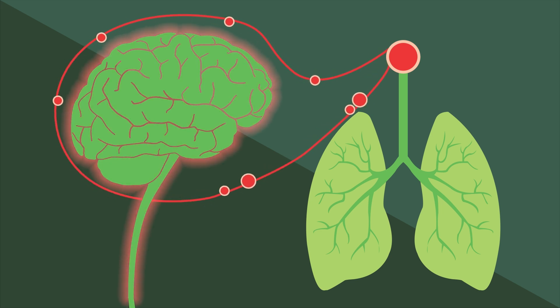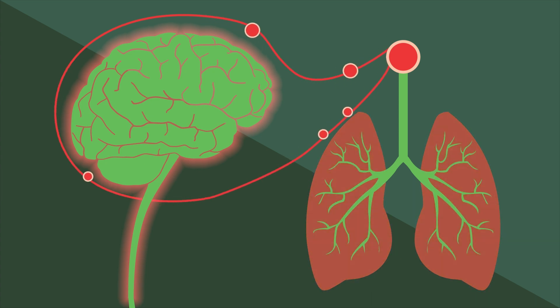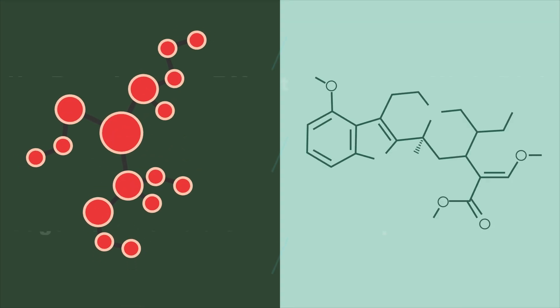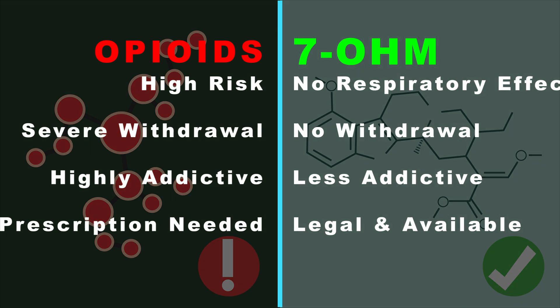This beta-arrestin-2 pathway is widely known to be associated with the severe side effects of opioids, including respiratory depression, which could lead to passing out or even respiratory arrest. This is why many researchers point to 7-OHM's potential as a safer alternative to synthetic opioids and its potential to manage pain while minimizing harmful side effects.